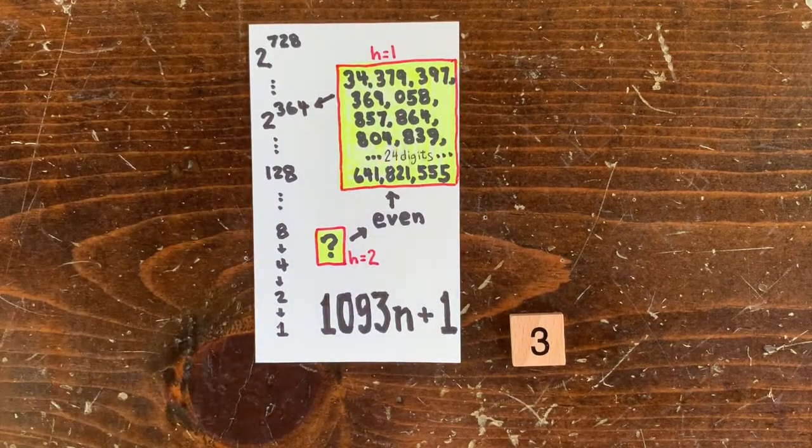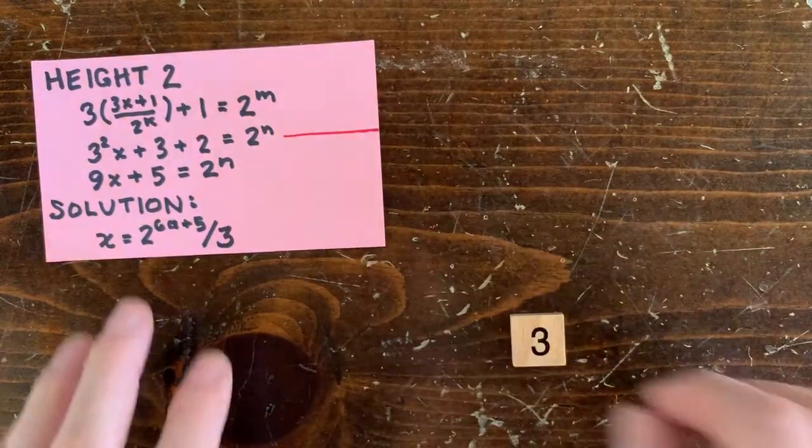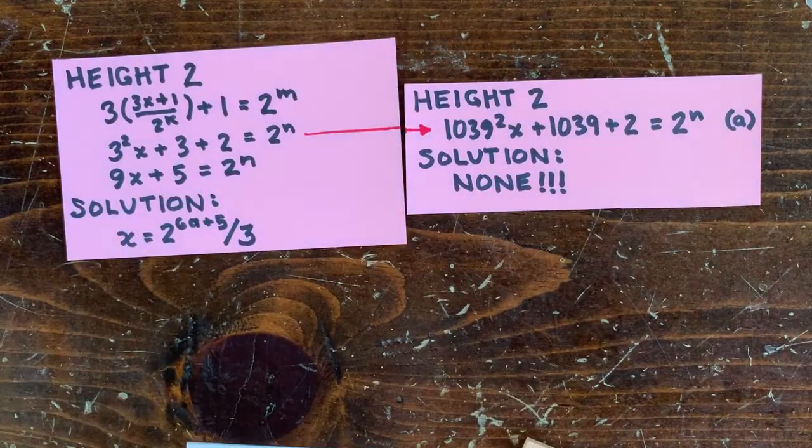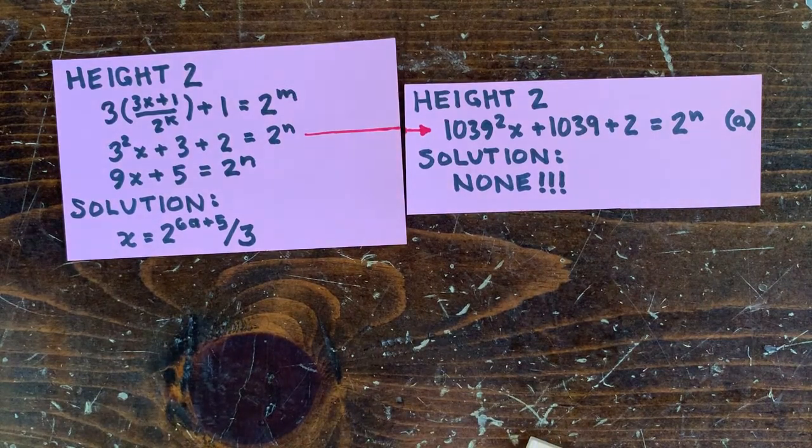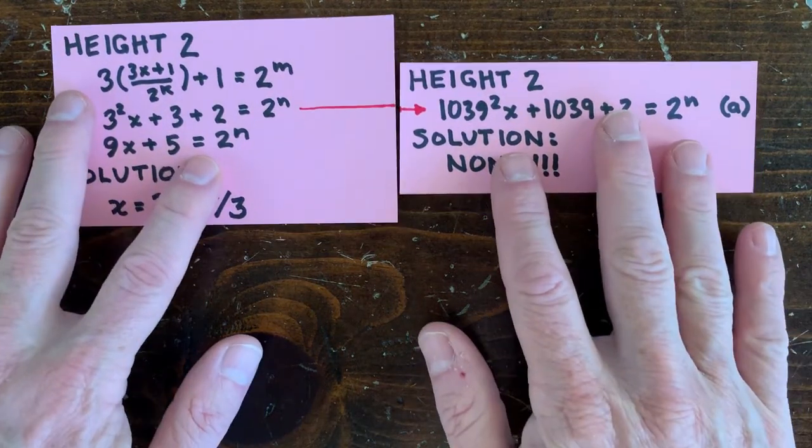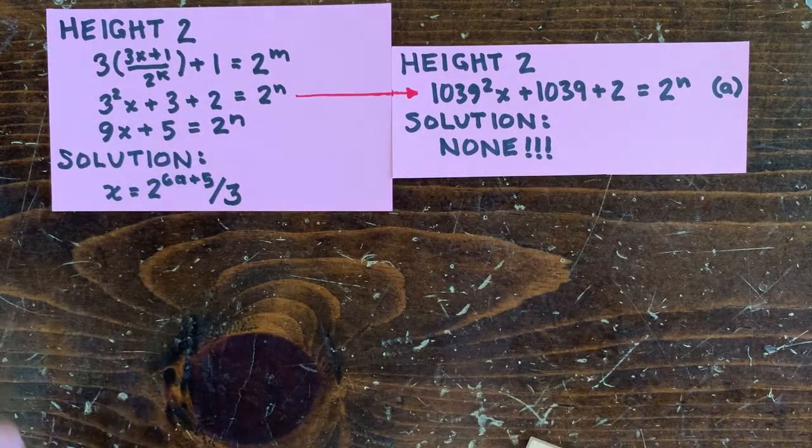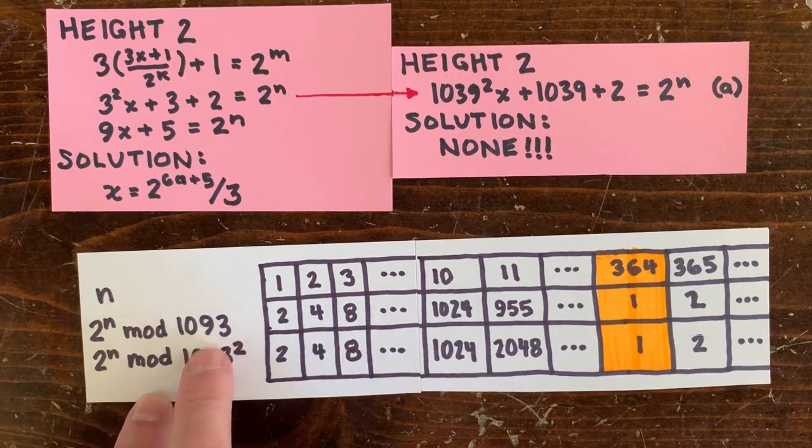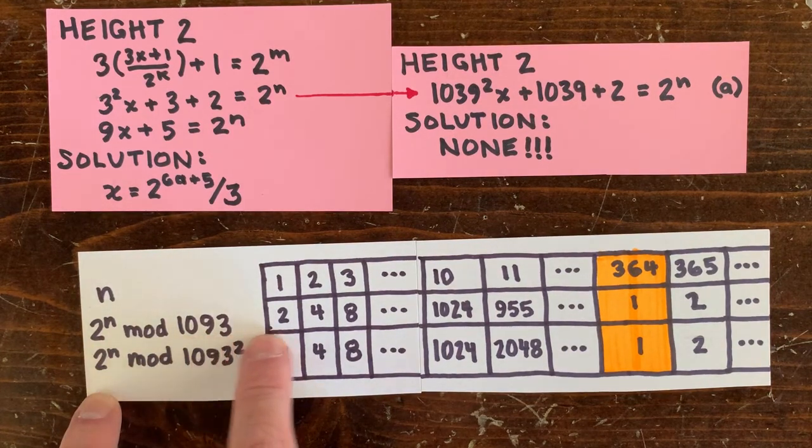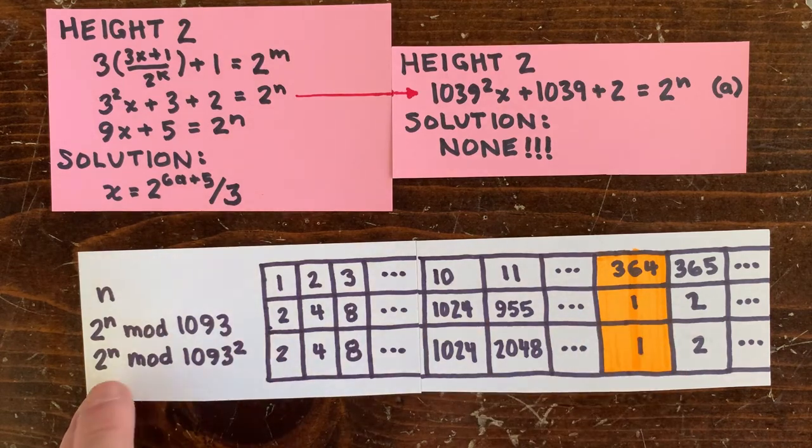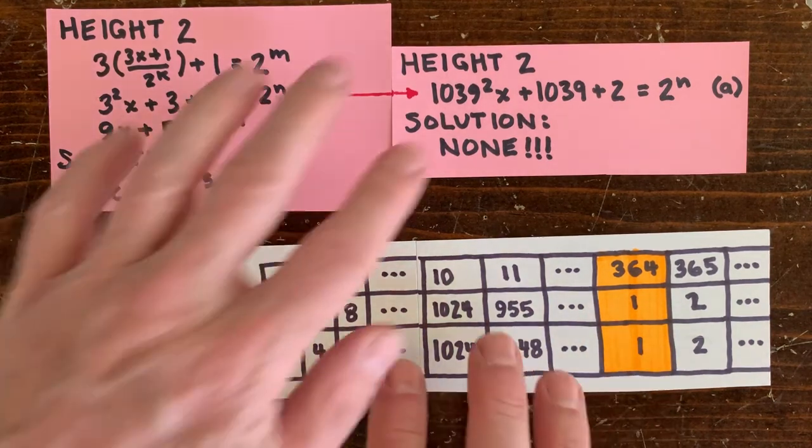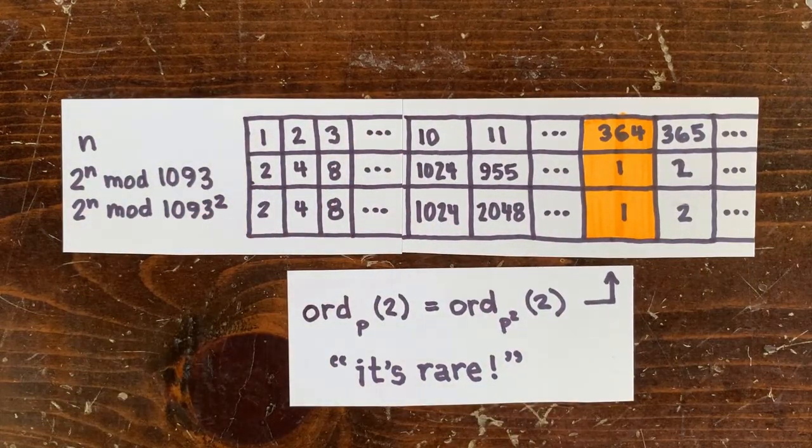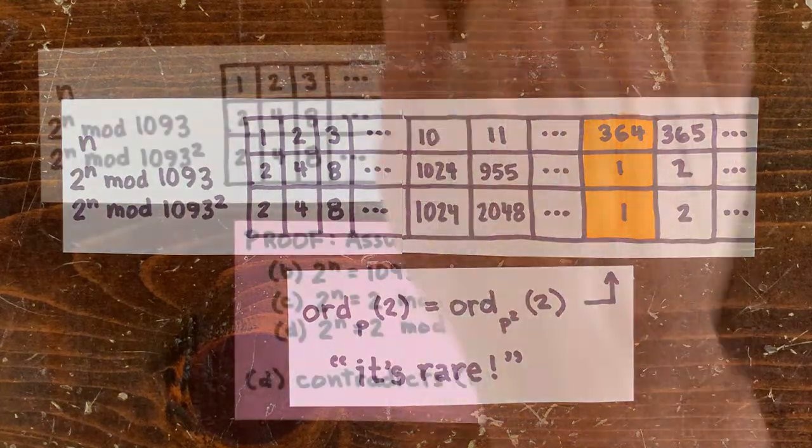How do we know there aren't any height 2 numbers? Let's take the equation for height 2 numbers from 3n plus 1 and modify it for 1093. So here it is. And it turns out that there's no x that satisfies this equation. And for a super weird reason. That 1093 is the first number where 2 to the n divided by p equals 1 exactly when 2 to the n divided by p squared equals 1. I was amazed to find that out through brute force search. And we can use that fact in step D of this proof.